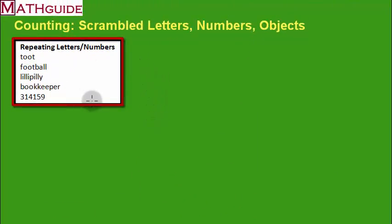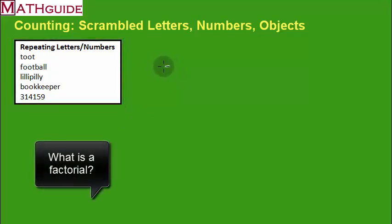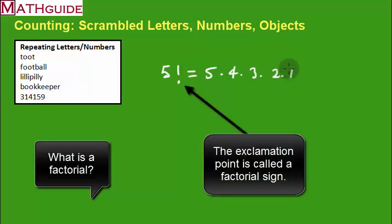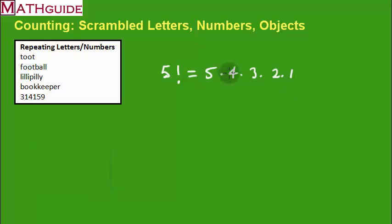Before we get into the math of repeating letters and numbers, let's talk about something called a factorial. If you were to see this expression, five factorial, it means five times four times three times two times one. Because we saw this in our last section that we had these numbers that trail off like this. More conveniently, we could plug into a calculator five factorial. I'm going to use these factorials to speed things up for these problems.